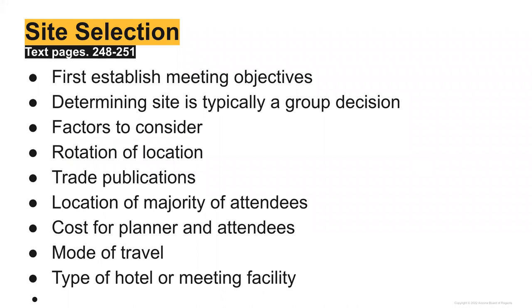After you've established your meeting objectives, now you want to determine where this conference is going to take place. This is generally a group decision — not just one person dictating — especially if you are in an association, education, or government sector. It's going to be a group decision that takes multiple factors into account.